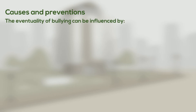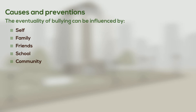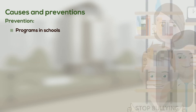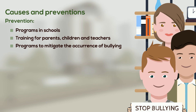Causes and preventions. The eventuality of bullying can be influenced by a series of circumstances, such as self, family, friends, school and community. To prevent bullying from occurring, several countries have set up programs in schools to provide training for parents, children and teachers — programs which intend to mitigate the occurrence of bullying.